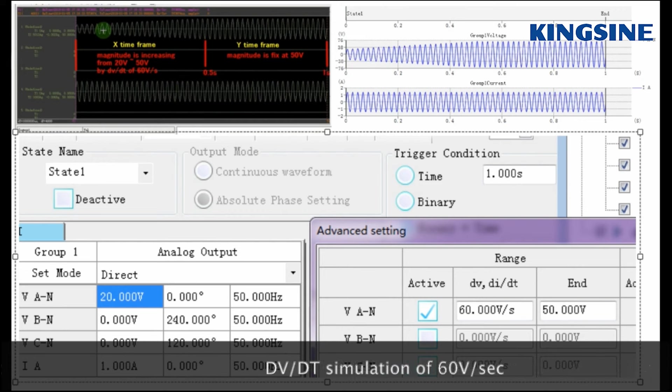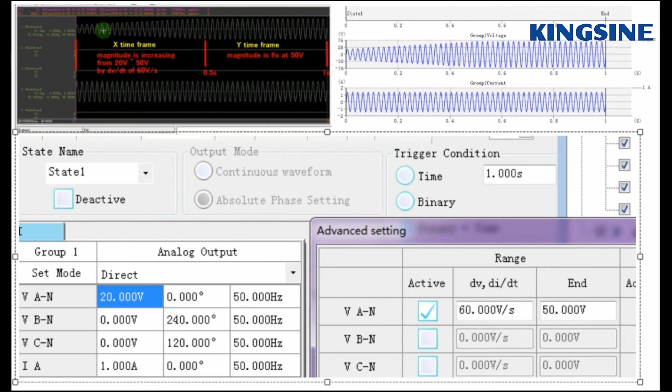Let's now try to simulate a voltage signal of 20 V and perform DV by DT of 16 V per second. We are setting the test time as 1 second.